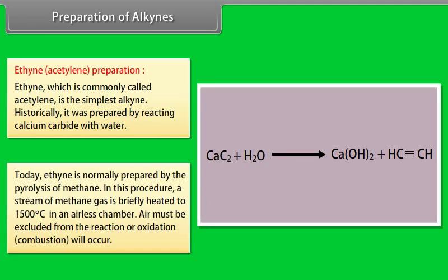Today, ethyne is normally prepared by the pyrolysis of methane. In this procedure, a stream of methane gas is briefly heated to 1500 degrees centigrade in an airless chamber. Air must be excluded from the reaction or oxidation and combustion will occur.